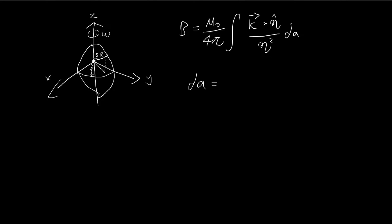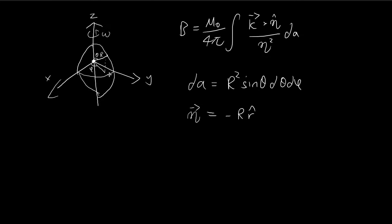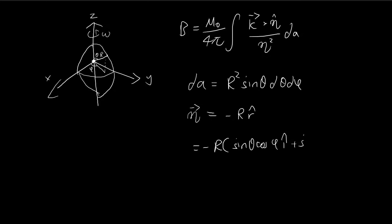For dA, we're going to use spherical coordinates, so it's r² sin θ dθ dφ. In standard spherical coordinates we have φ and θ. Since this is a spherical shell, r is a constant — big R. Our eta is negative r times the r-hat vector, because we're evaluating the magnetic field at the center, so eta points from the surface to the center. We can express the r-hat vector in Cartesian coordinates as sin θ cos φ î + sin θ sin φ ĵ + cos θ k̂.